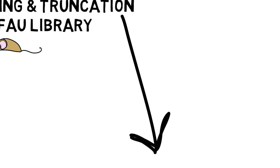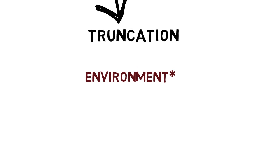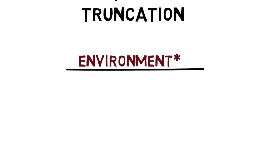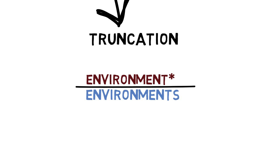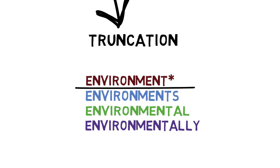Tip two: truncation allows you to insert a symbol, also called a wildcard, at the end of a word stem to retrieve various forms of one word, all through one search. For example, let's say we want to find multiple forms of the word 'environment.' We can add an asterisk to the word stem 'environ*.' This will retrieve the stem word 'environment,' as well as 'environments,' 'environmental,' 'environmentally,' and so on.